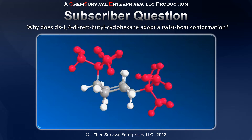To begin answering that question, I've drawn the molecule here in the chair conformation and I've labeled the t-butyl substituents in this hot pink color so they'll stand out. Of course, the ring consists of these six gray carbon atoms and the associated hydrogens in white.